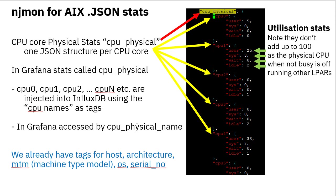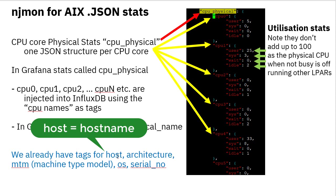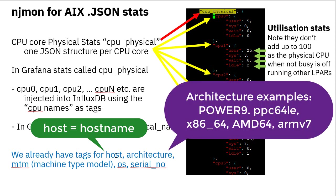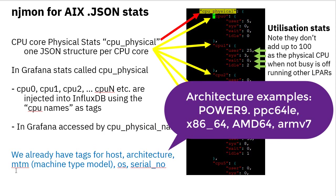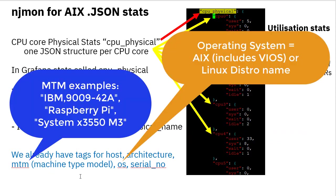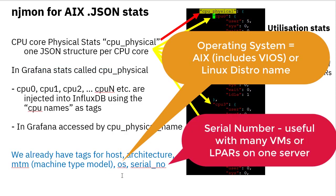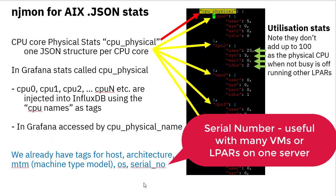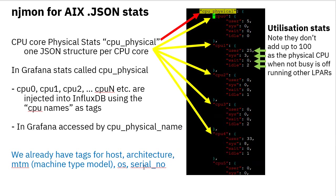Now inside Grafana we can pull out these things. If we use the CPU physical name tag, they actually give us a list of these. We already have a set of tags — for example, we have the host. For a particular file, there's only one host and one architecture. Then in IBM speak, we have machine type model names. OS is very obvious — the operating system, AIX or Linux. We also pick up the serial number, which is useful because we can find all the operating systems on a particular serial number and all the virtual machines on that particular server.